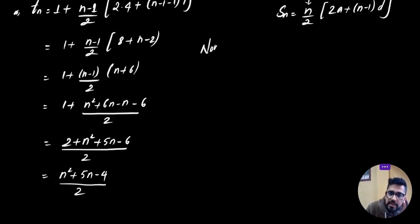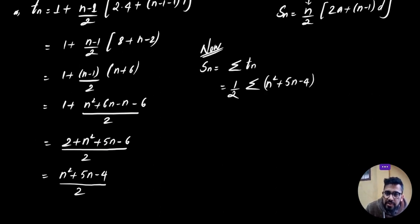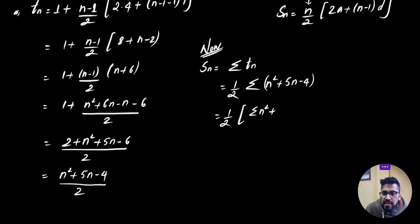Now Sn equals summation of Tn, which is 1/2 times the summation of (n² + 5n - 4). This equals 1/2 times [summation of n² plus 5 times summation of n minus summation of 4].